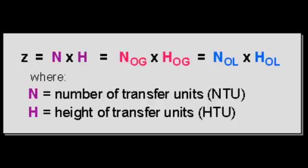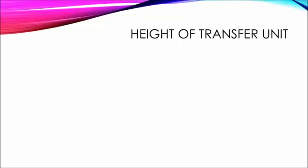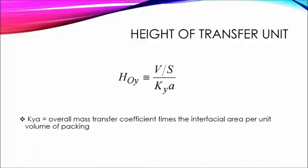Since the NTU is dimensionless, to get units of height, the remaining factor in the design equation, defined to be the HTU, must have units of height and is called the height of one transfer unit, where KYA is the overall mass transfer coefficient times the interfacial area per unit volume of packing.